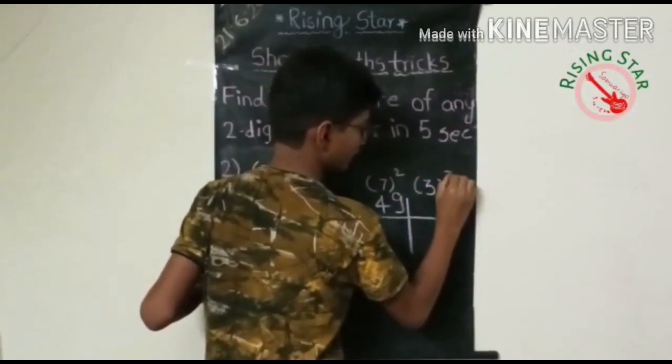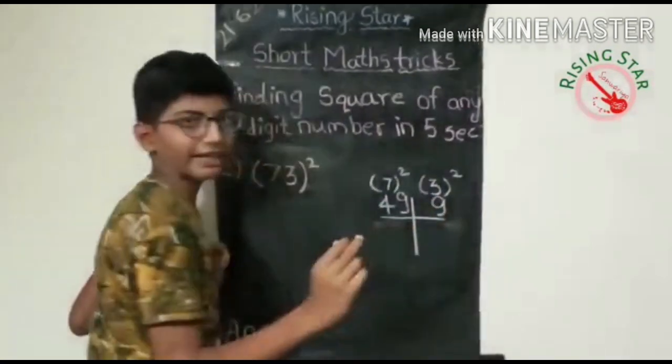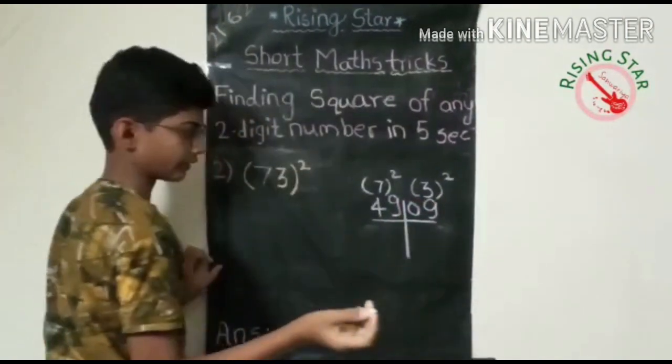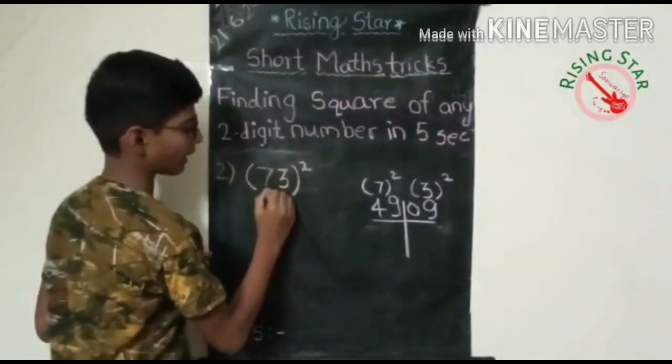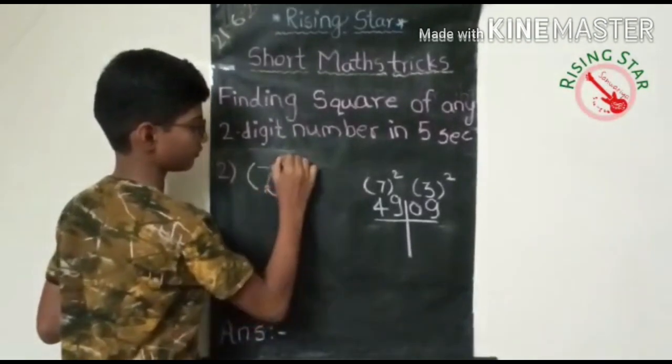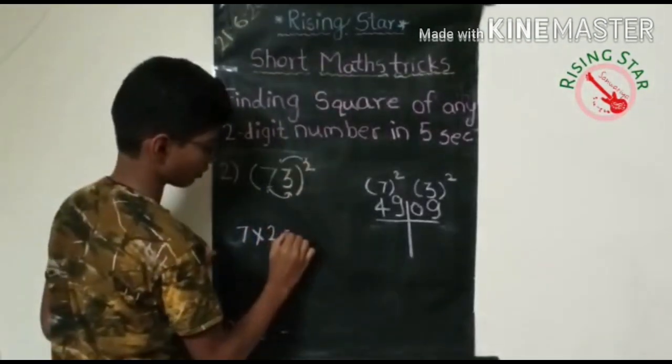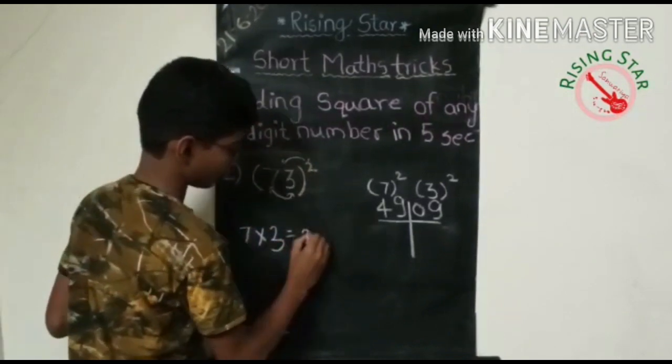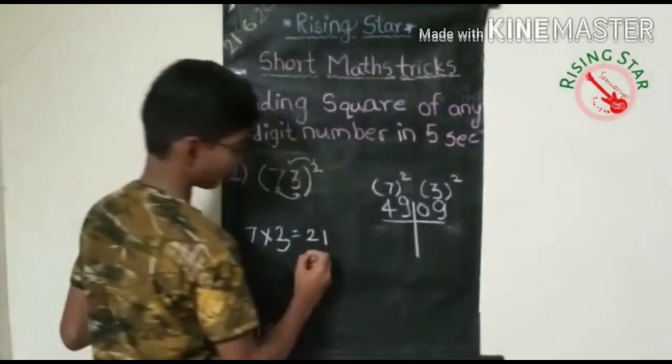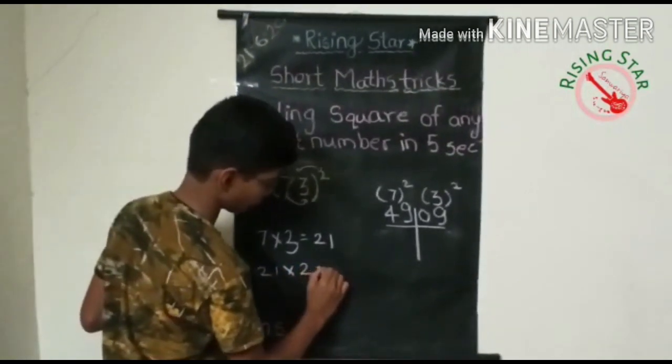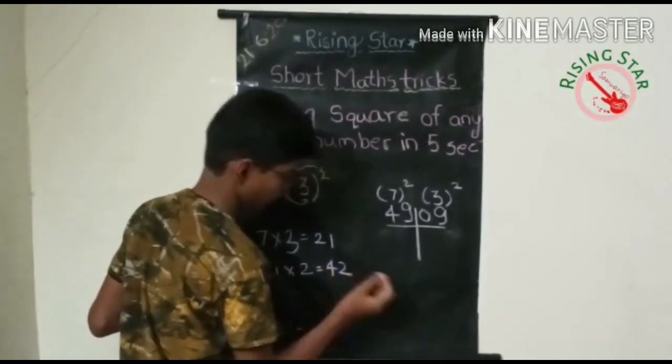But we cannot write only nine, so add zero before nine like this. And now multiply them. Seven into three is twenty-one. Twenty-one into two is forty-two.